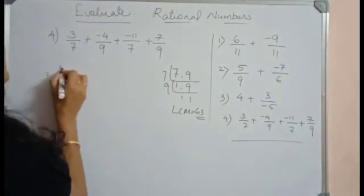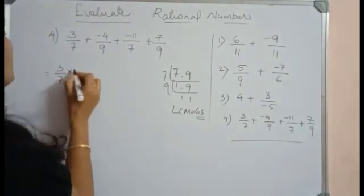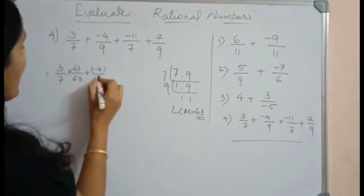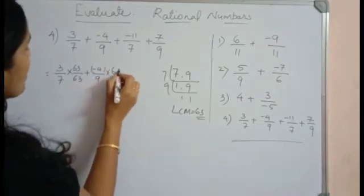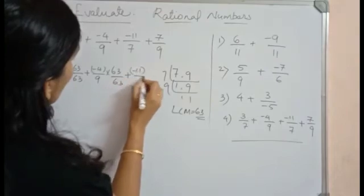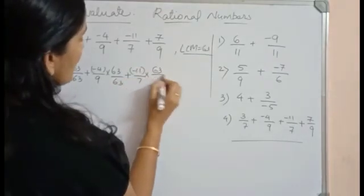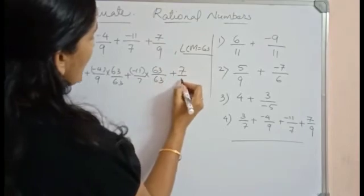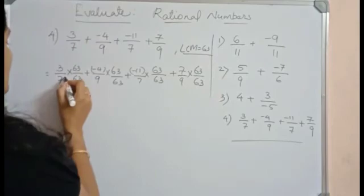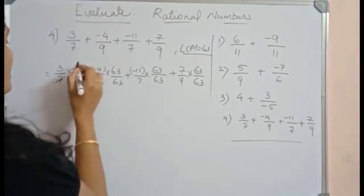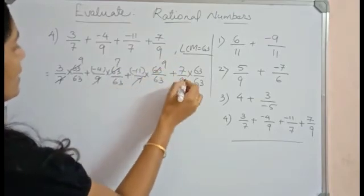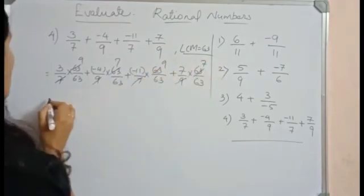What you have to do is: 3/7 × 63/63 + (-4/9) × 63/63 + 11/7 × 63/63 + 7/9 × 63/63. Here cancel the 7 with the 63. You'll get this as 9 and this will be 7. This will be 9 and this will be 7. Multiply and write it.